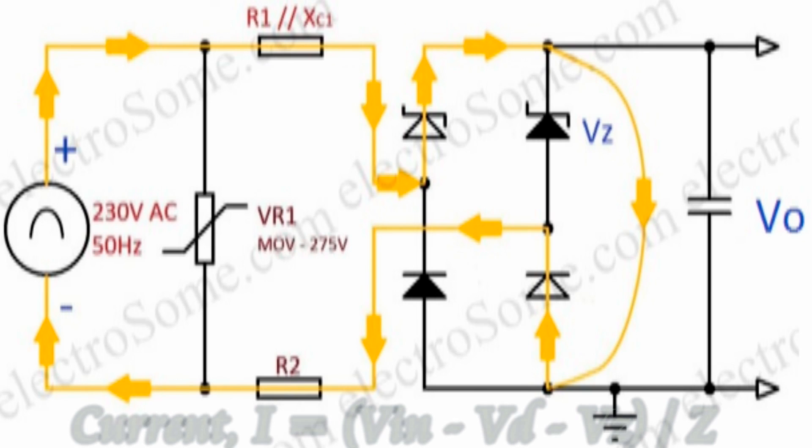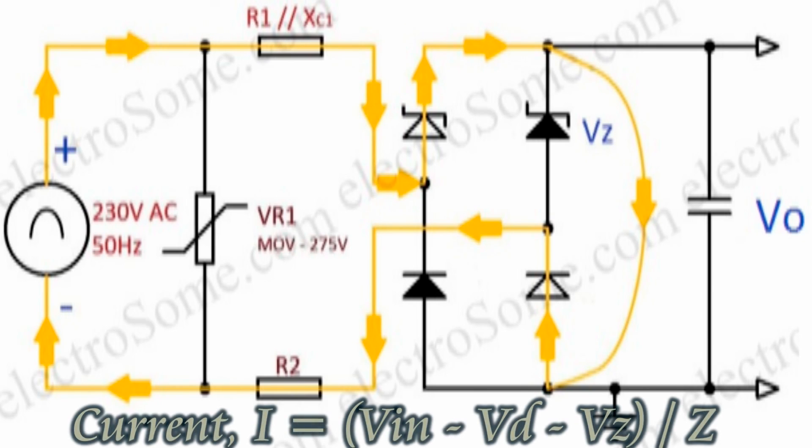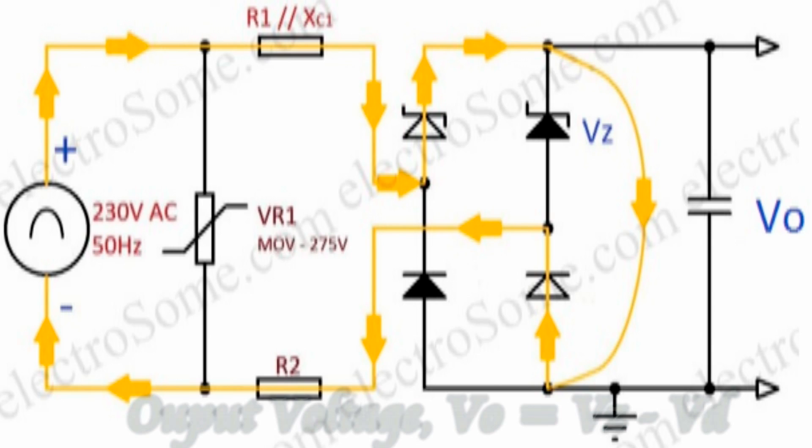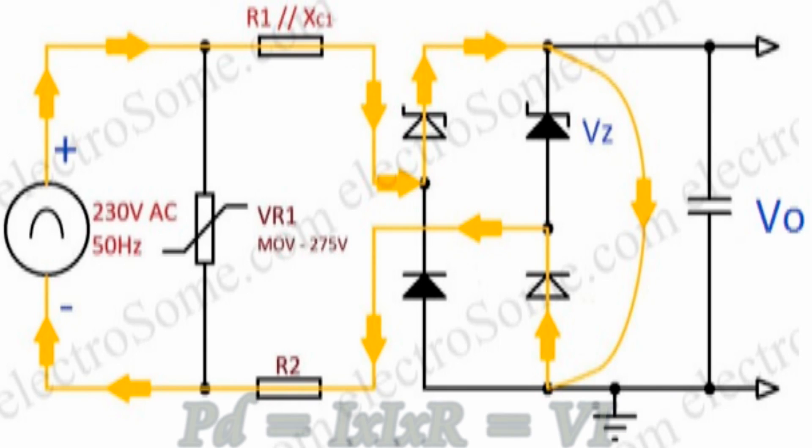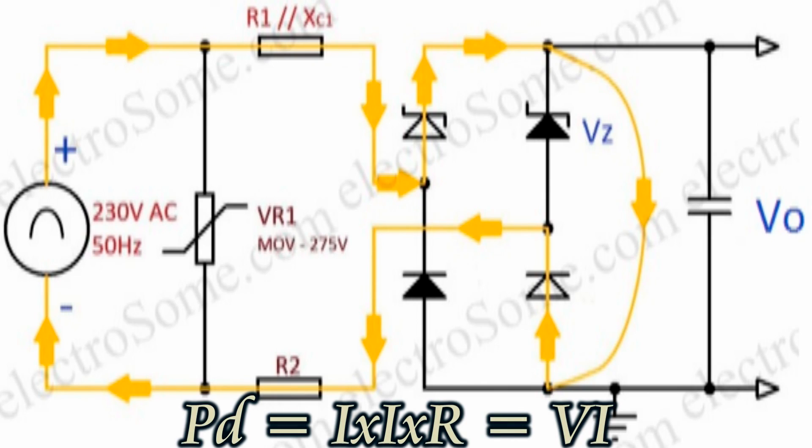So the total current through the circuit equals input voltage minus forward diode voltage drop minus Zener voltage divided by total impedance. The output voltage will equal Zener voltage minus the forward diode voltage drop. You can easily calculate the minimum power rating of each component using the common formulas, I²R or V×I.